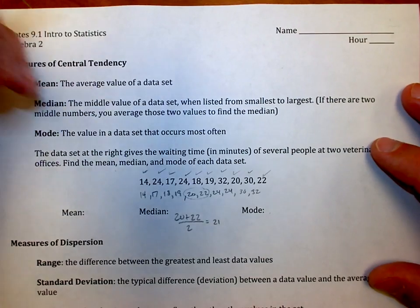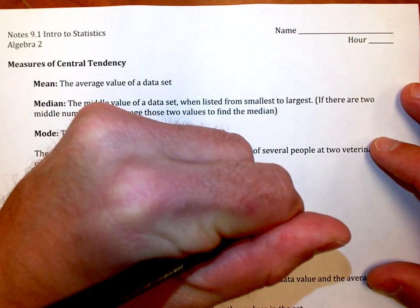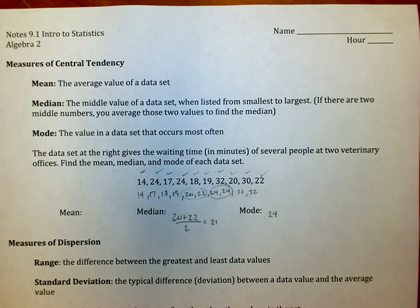The mode would be the number that occurs most often. In that case, 24 is the only one that occurs more than once, and the mode would be 24.